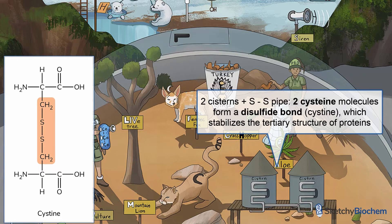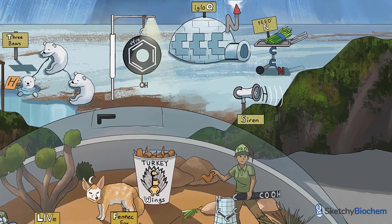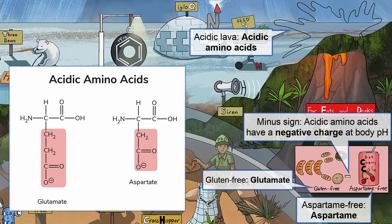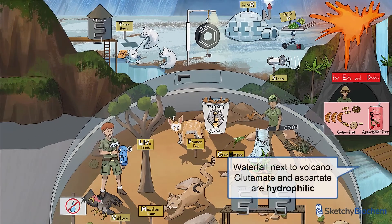Disulfide bridges play a vital role in stabilizing tertiary protein structures. This igloo represents glutamine. Glutamine is needed to make purine and pyrimidine nucleotides. Let's turn our attention to the gluten-free pastries and the aspartame-free diet cherry cola at the volcano snack stand. These represent the acidic amino acids glutamate and aspartate. The side chains of glutamate and aspartate have a negative charge at body pH. We drew a waterfall to help you remember that glutamate and aspartate are hydrophilic, or water-loving.